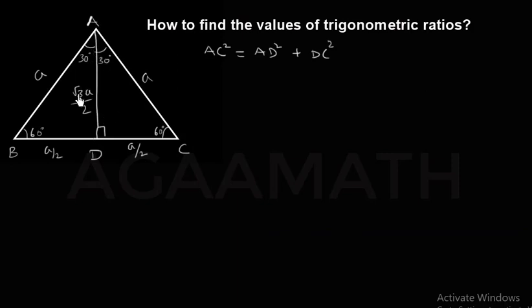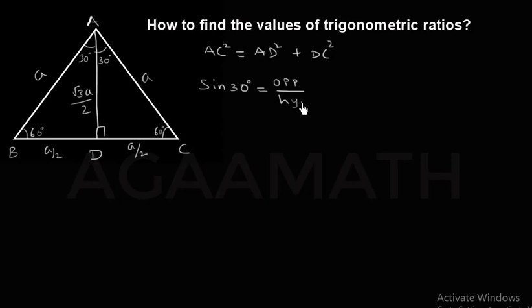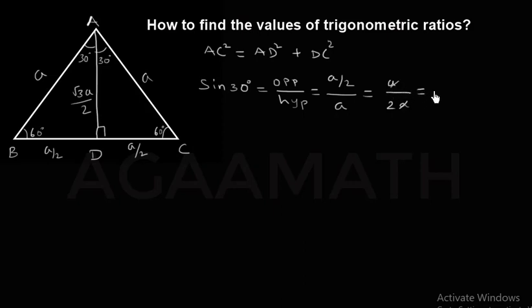Now we got the length of AD, that is √3·a/2. Now we take the trigonometric ratios values which we have learnt in previous classes. So that is the ratio sine 30 degrees. Sine — the ratio of sine is opposite side of theta by hypotenuse side of theta. So the opposite is a/2 and the hypotenuse is a. It means when you simplify it, we get a/2 divided by a, which is 1/2. So sine 30 degrees is 1/2.